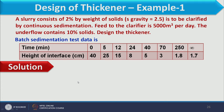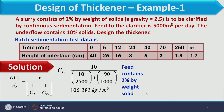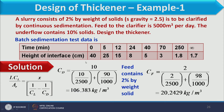For the solution, the final equation is used to calculate AR, the cross-sectional area, from which the diameter is found. First we calculate X, CL, and CD. Since the underflow has 10% solid and 90% water, CD is calculated as 10/(10/2500 + 90/1000) = 106.38 kg/m³. The feed contains 2% solid and 98% liquid, giving CF = 20.2429 kg/m³.